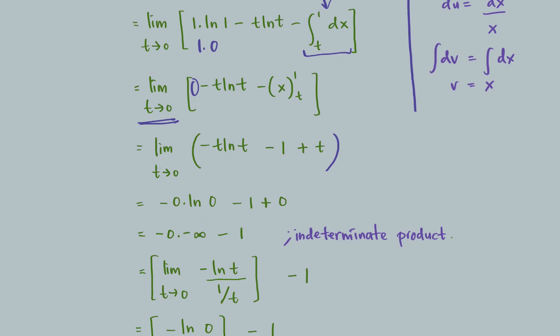After that substitute the value of 0. We have negative 0 times ln 0 minus 1 plus 0. This one is clear. Negative 1 plus 0 is equal to negative 1, but right now what we have is this part: negative 0 times negative infinity. This one is indeterminate product when 0 times infinity.